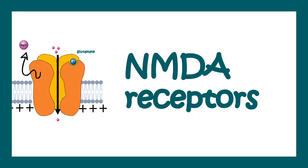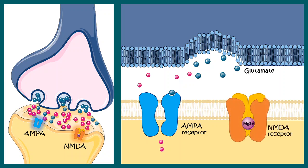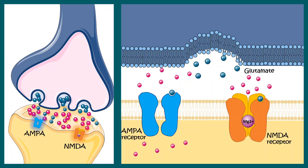NMDA receptors are ligand-gated ion channels but slightly different from the others. In the postsynaptic terminal, while AMPA receptors lead to cation influx upon binding glutamate, making the membrane more positive, the NMDA receptor works on a different principle. When there is cation influx through the AMPA receptor, the NMDA receptor may not be active because it has a magnesium block. At the initial stage where the inside of the membrane is still somewhat negative, the magnesium block is present in the NMDA channel's pore, so no cations can pass through.